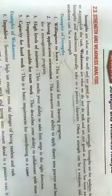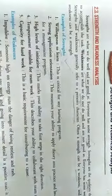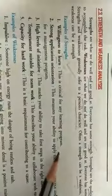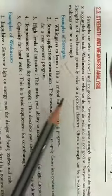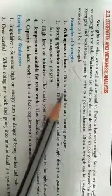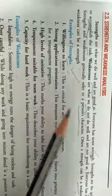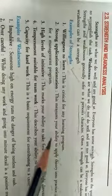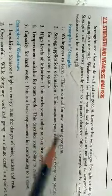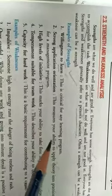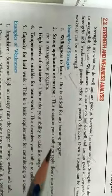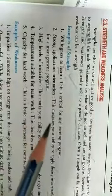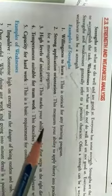Often a strength can be a weakness and vice versa — strength can also become a weakness, and weakness can also become a strength. Now, examples of strength: the first is willingness to learn. If you are always willing to learn anything in any situation, this is your strength. Next is strong application orientation, which measures your ability to apply theory into practice.